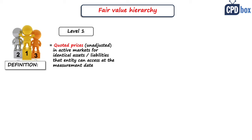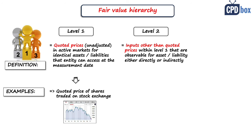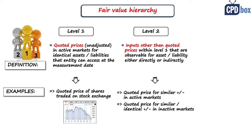A typical example of Level 1 is quoted prices of equity shares traded on a stock exchange. Level 2 inputs are inputs other than quoted prices within Level 1 that are observable for the asset or liability, either directly or indirectly. Examples include quoted prices for similar assets or liabilities, quoted prices for identical or similar assets in inactive markets, and other observable inputs such as interest rates or yield curves published on financial data servers like Yahoo Finance or Bloomberg.